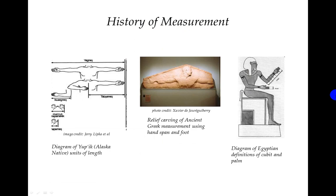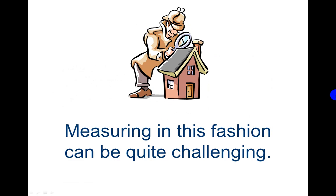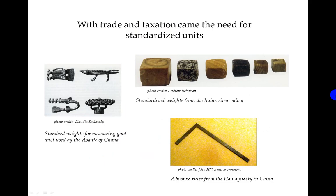Here are some examples of measurements being used in history. Measuring in this fashion can be quite challenging since you don't have a standard. With trade and taxation came the need for standardized units. Here are some examples of where they actually used these in ancient times: standardized weights, a bronze ruler, and some more standardized weights.